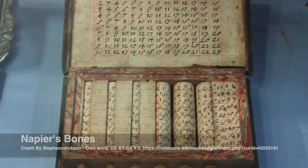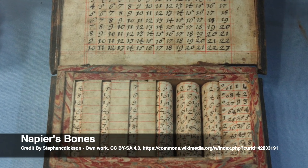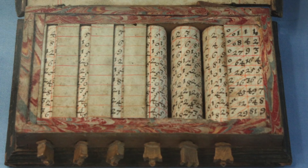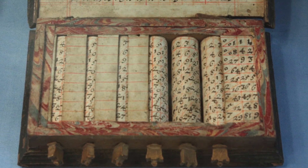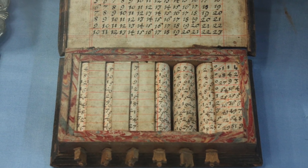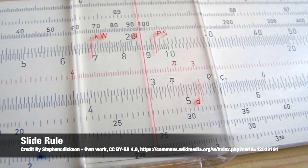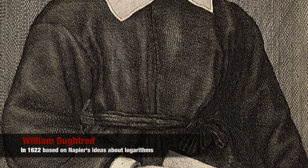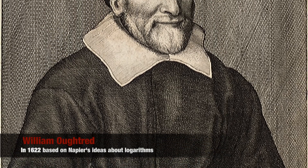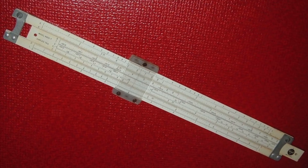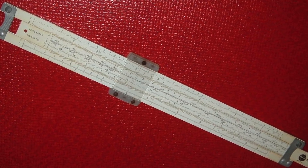Then came Napier's bones, invented by John Napier in 1614. It allowed the operator to multiply, divide, and calculate square and cube roots by moving rods around and placing them in a specially constructed board. Then came the slide rule, invented by William Oughtred in 1622. It is based on Napier's ideas about logarithms and was used primarily for multiplication, division, roots, logarithms and even trigonometry.